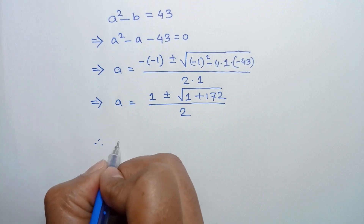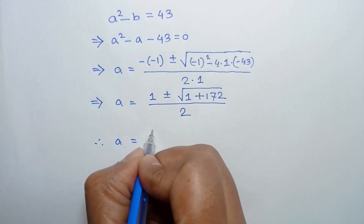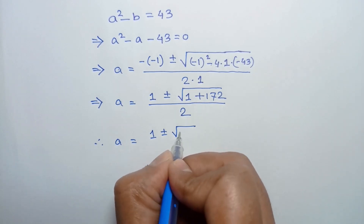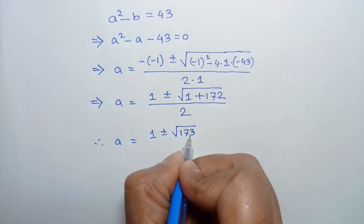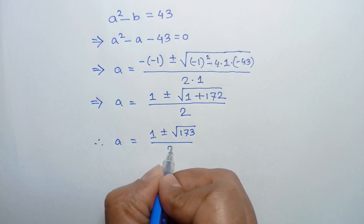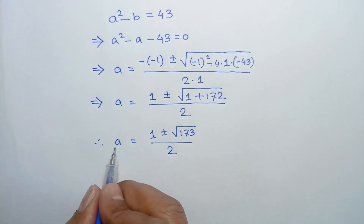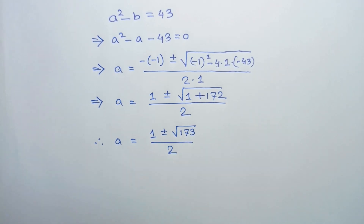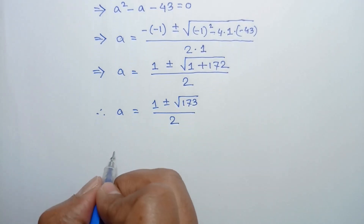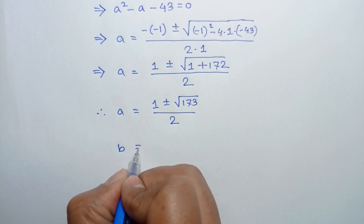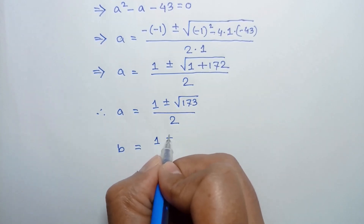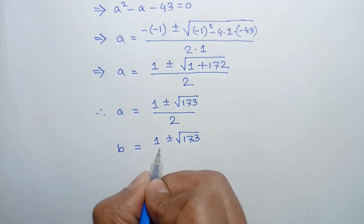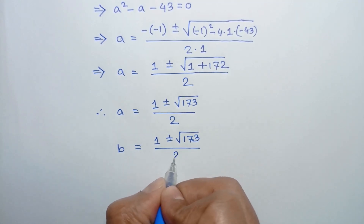So the value of a equals 1 plus or minus square root of 173, over 2. Substituting into equation 3, the value of b equals 1 plus or minus square root of 173, over 2.